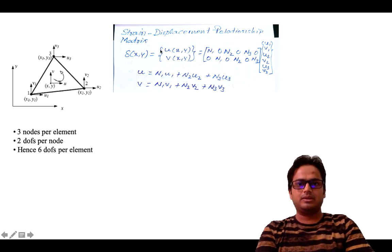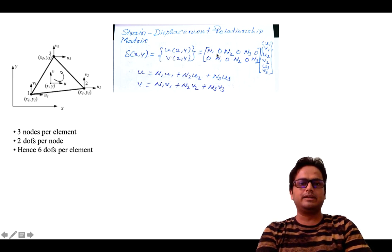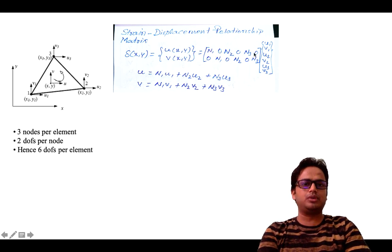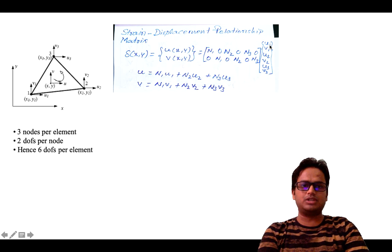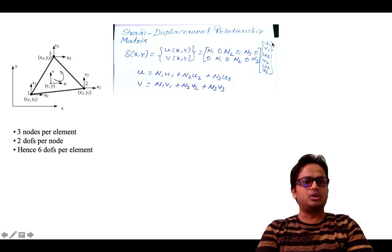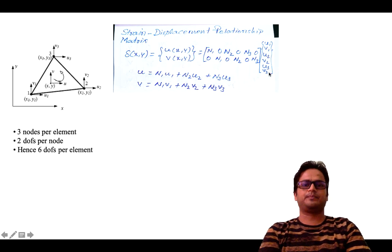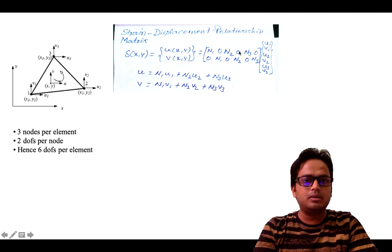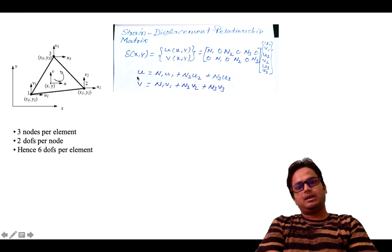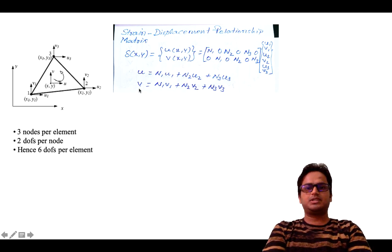In the last class we derived the displacement matrix in terms of shape functions: n1 0, n2 0, n3 0, with orientation u1 v1 u2 v2 u3 v3. After multiplication you get u equals to n1·u1 plus n2·u2 plus n3·u3, and similarly v equals to n1·v1 plus n2·v2 plus n3·v3.